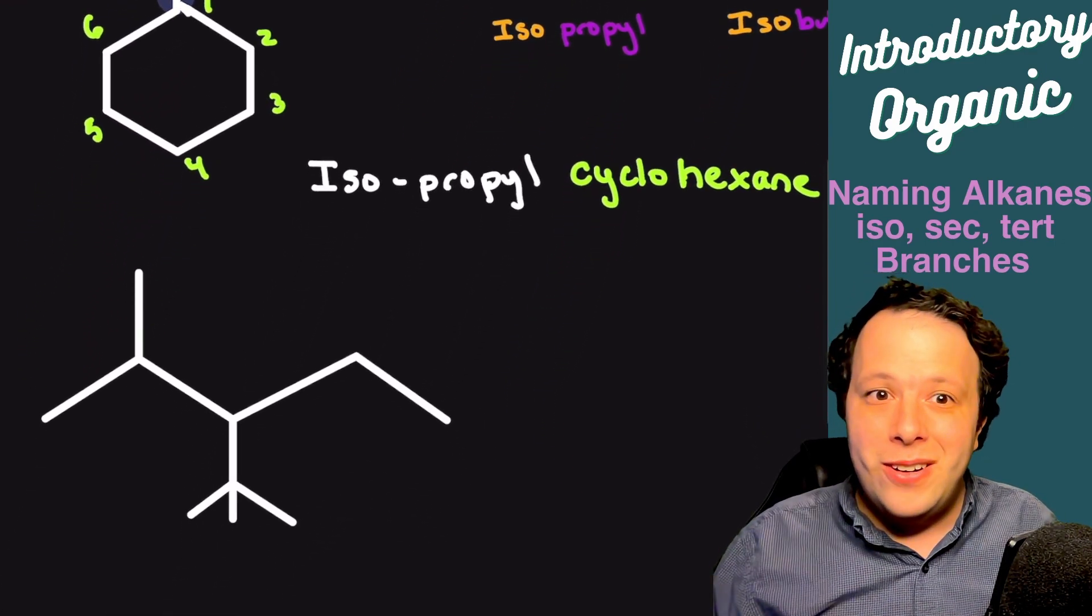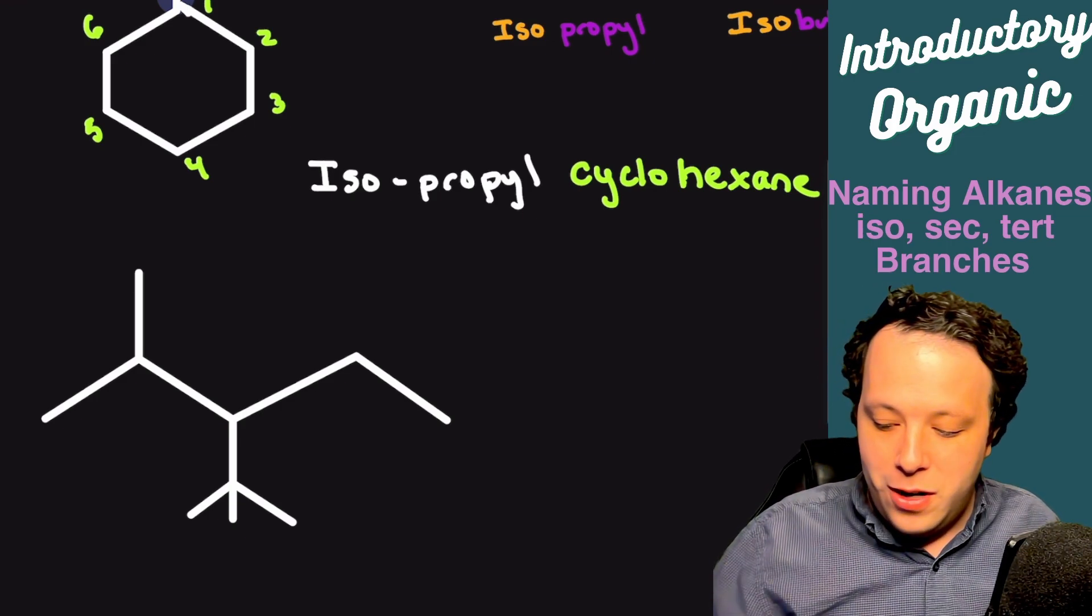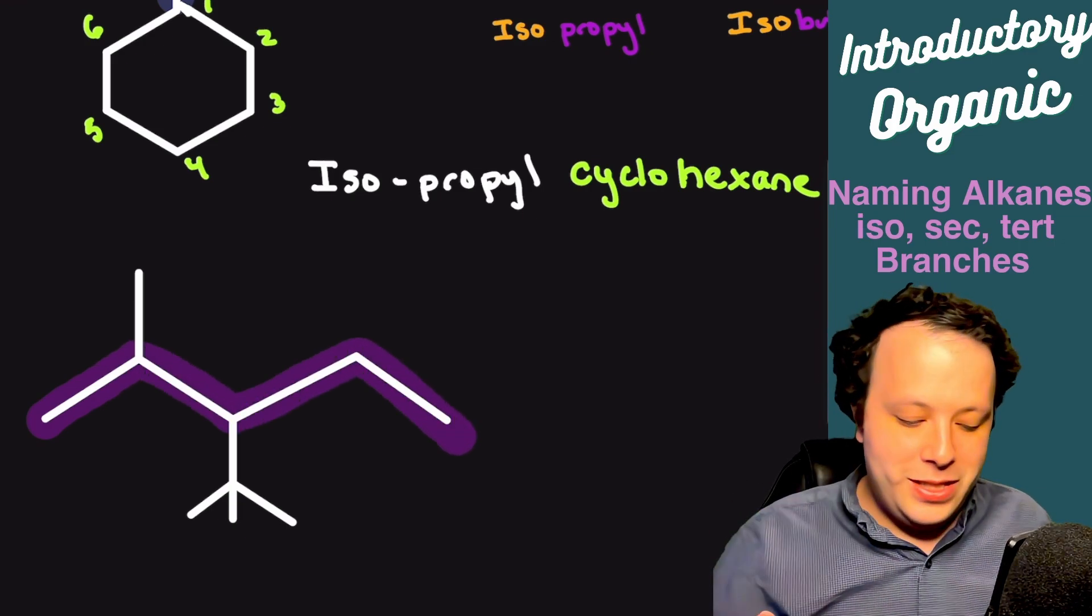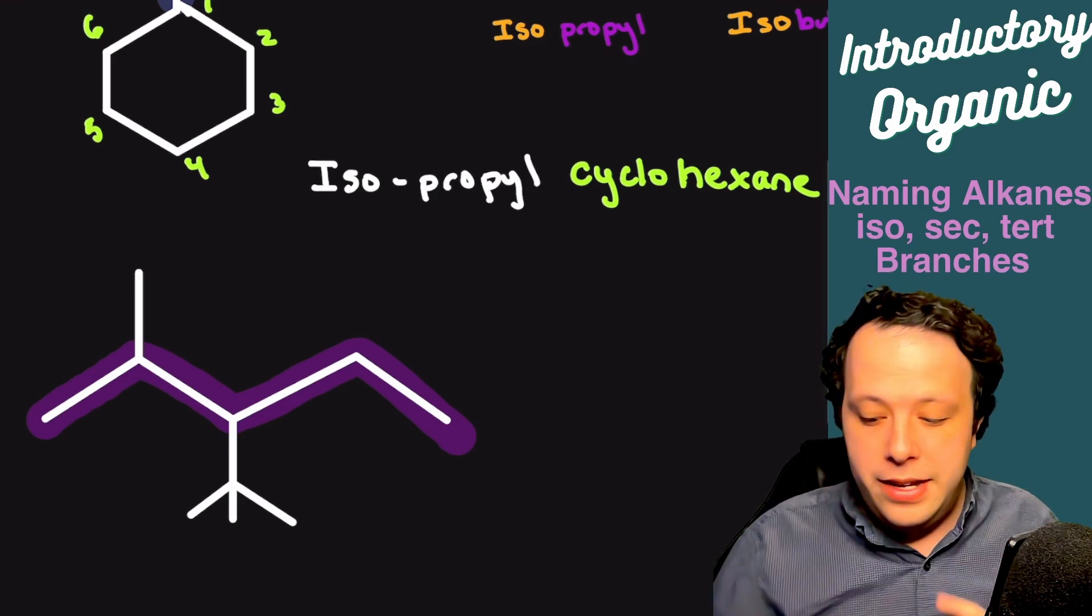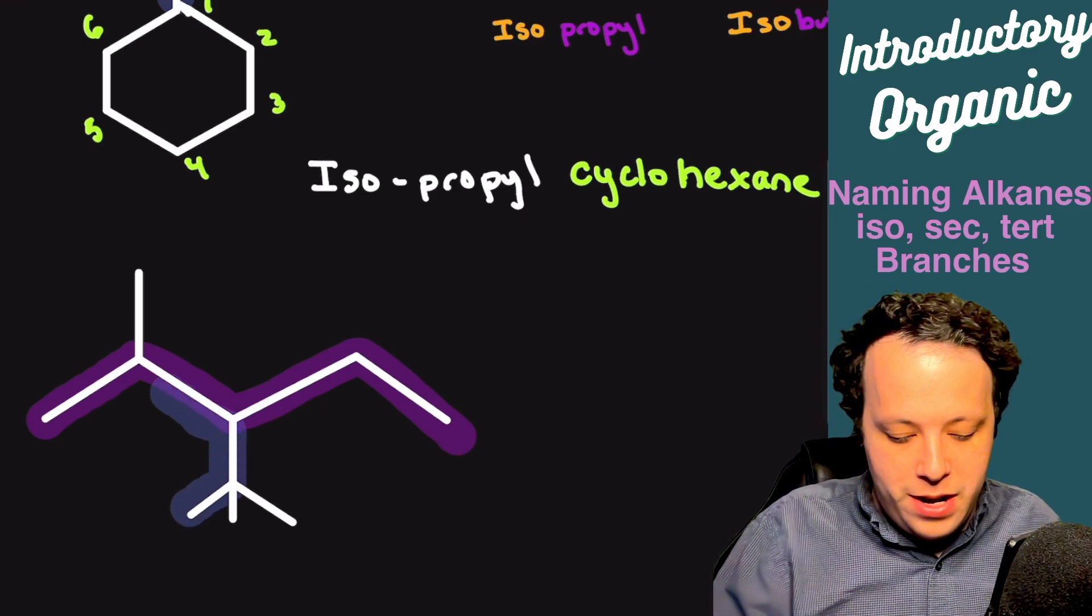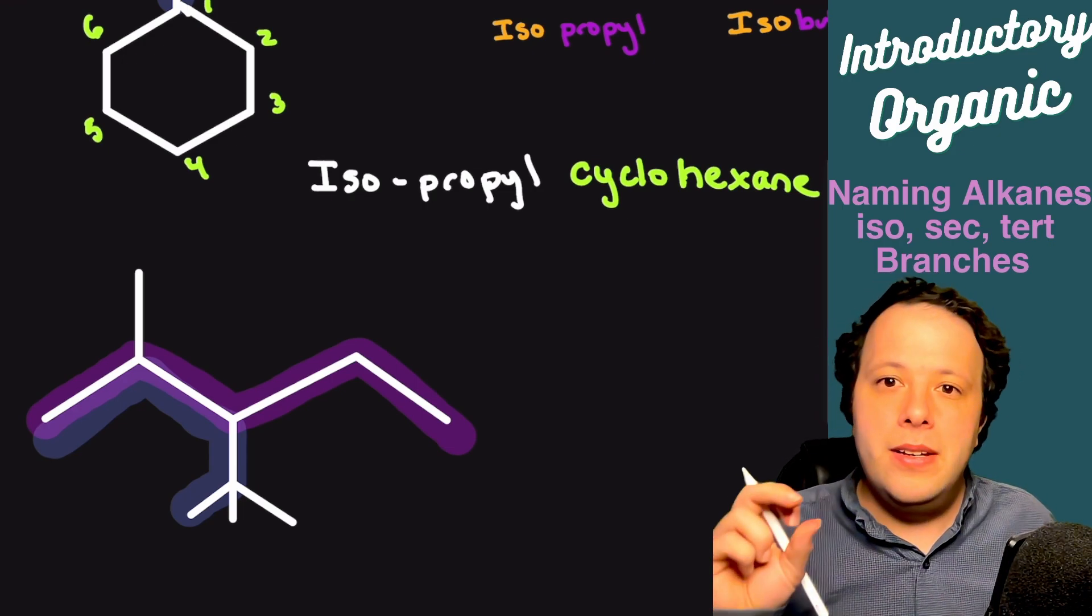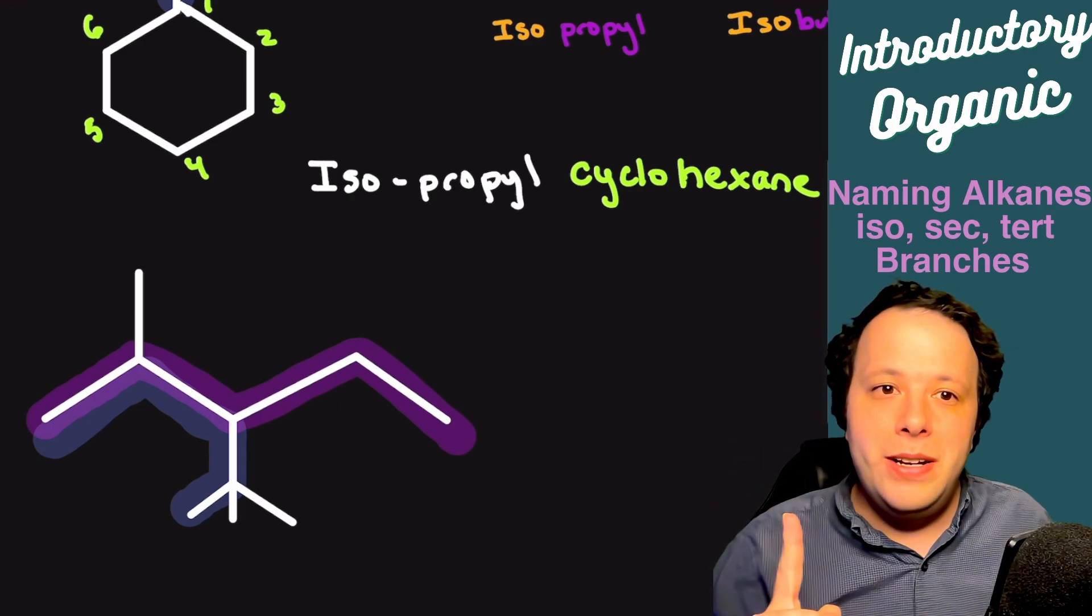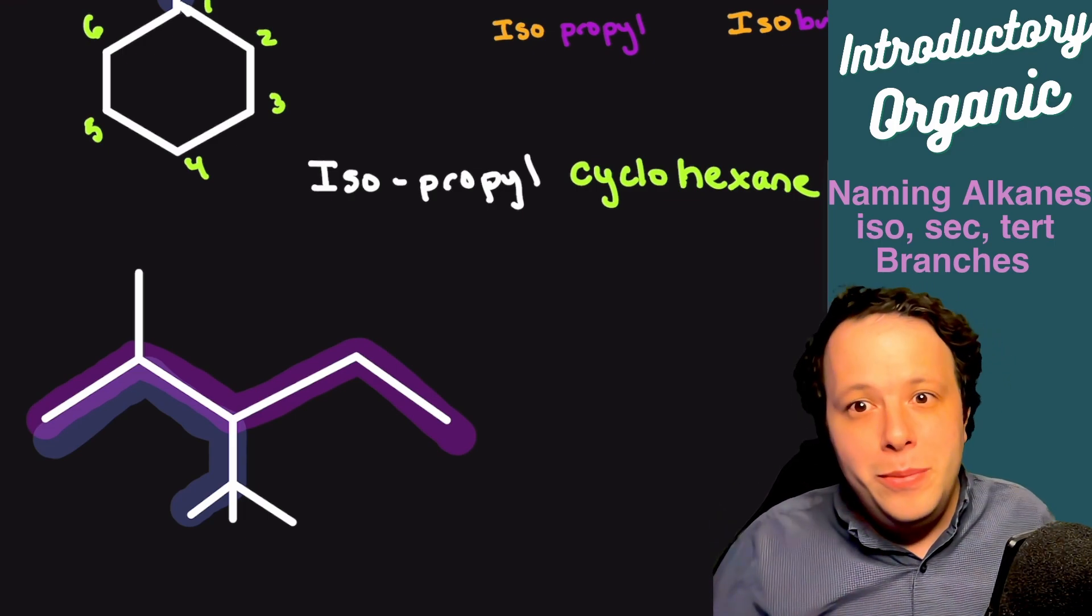Let's do another. Right here, the same rules apply. You want to find what your longest carbon chain is. You quickly can see that if I go across, I have five, and that one's going to be your longest chain. Now there are other options here that you could have had. You could go across, or you could have wrapped around as well, and the name is actually going to be different in this situation.